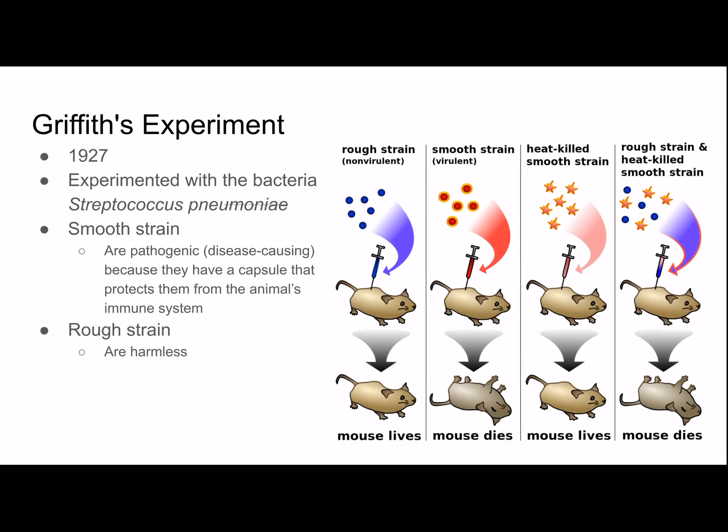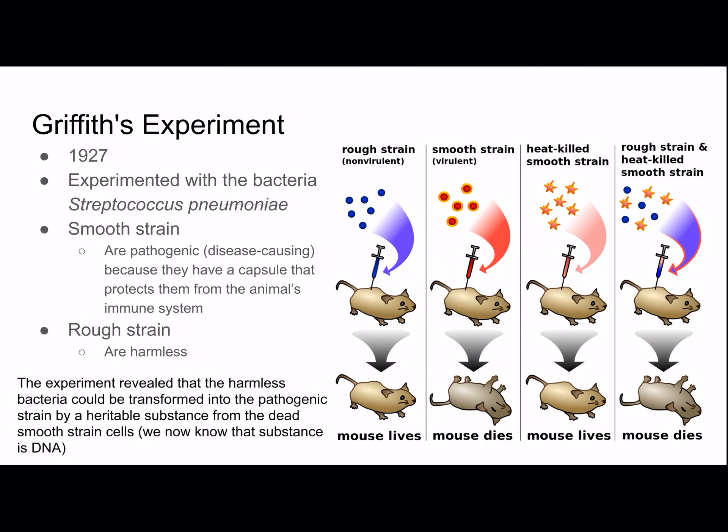In the experiment, he injected mice with the rough strain and the mouse lived. The smooth strain killed the mouse. The heat-killed smooth strain — the mouse lives. But when he mixed the heat-killed smooth strain with the rough strain, the mouse died. This revealed that the harmless bacteria could be transformed into the pathogenic strain by a heritable substance from the dead smooth strain cells. We now know that substance is DNA.